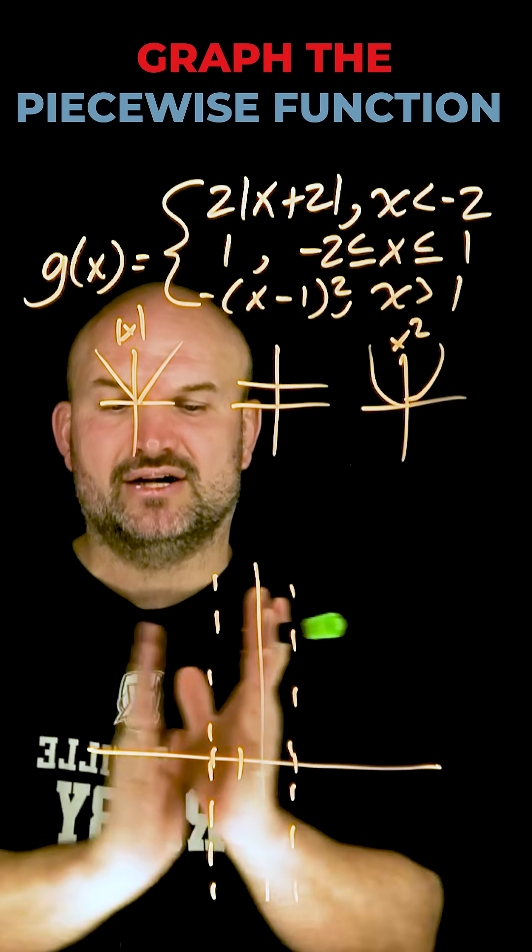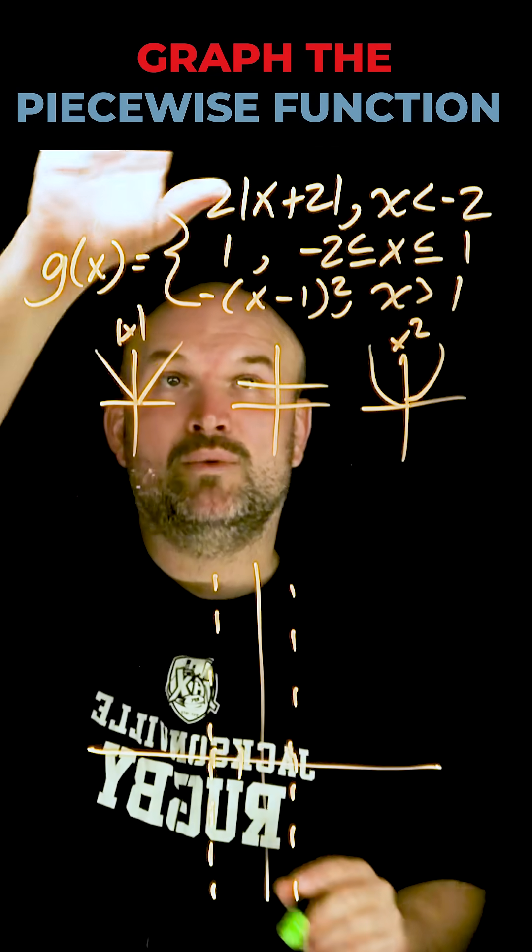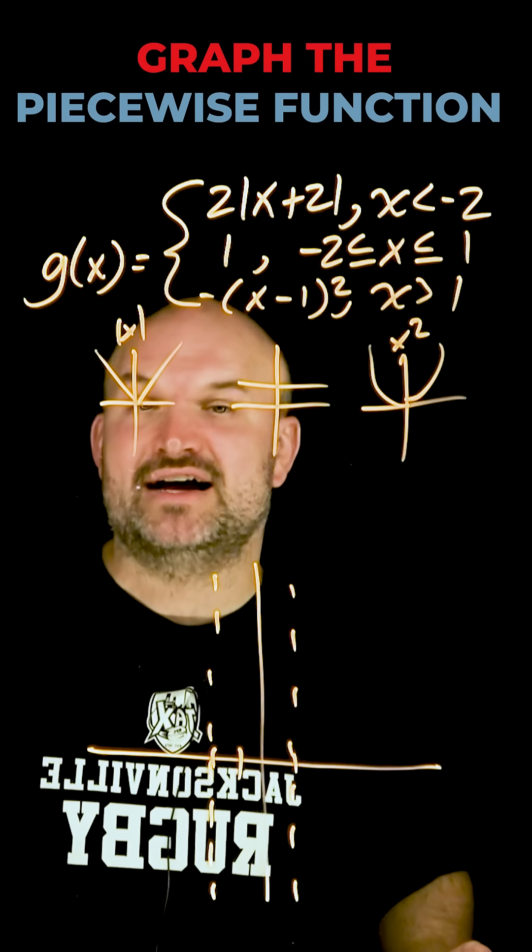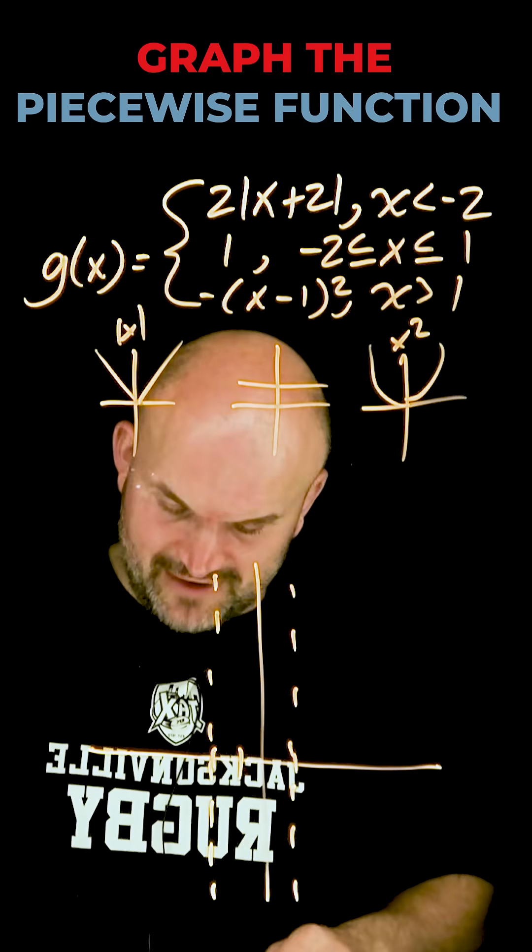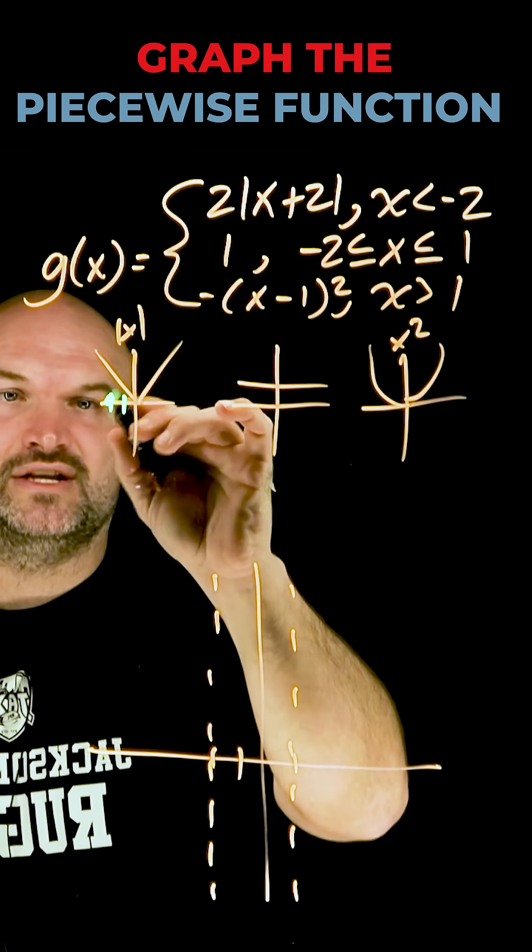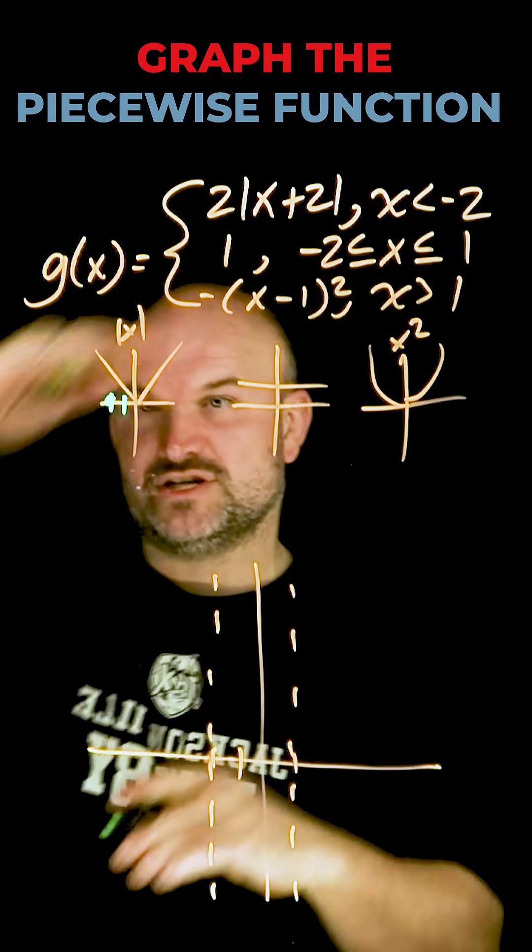So for this section right here, this is for x values that are less than negative 2, we have the equation y equals 2 times absolute value of x plus 2. So that's going to be my v-shaped graph. And we need to understand what are these transformations doing. So obviously, the x plus 2 is shifting the graph two units to the left, and then we have a vertical stretch of 2.